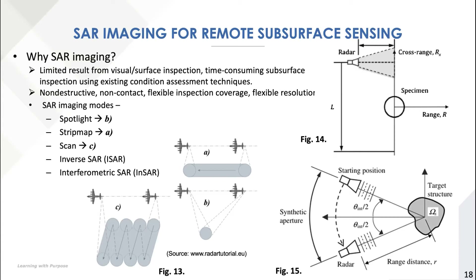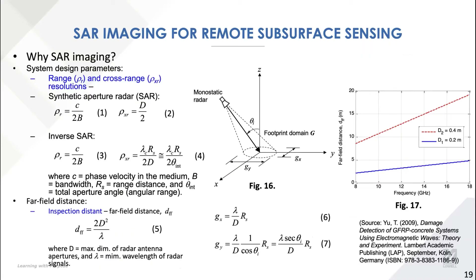By looking at these different modes, resolution will certainly vary, meaning SAR imaging can be used for different purposes. For large area sensing, a low-resolution but rapid inspection mode can be used. For more thorough or detailed inspection, the spotlight mode can be used. A few theoretical aspects are provided on this slide. From these equations, we know that resolutions in SAR images can be improved by bandwidth, frequency, and the size of the synthetic aperture. That offers civil engineers an opportunity to design a system with a target defect in mind. In Figure 16, we can see that the range between the radar and the target affects the size of the footprint.